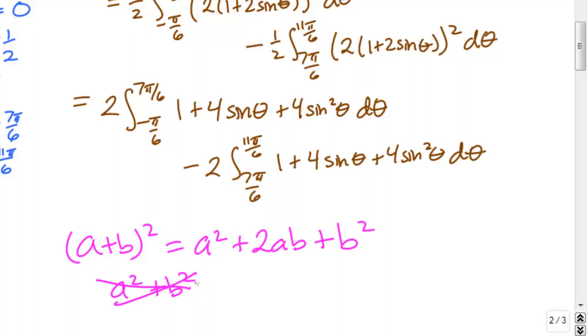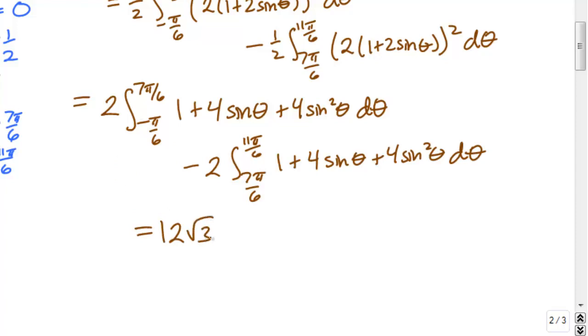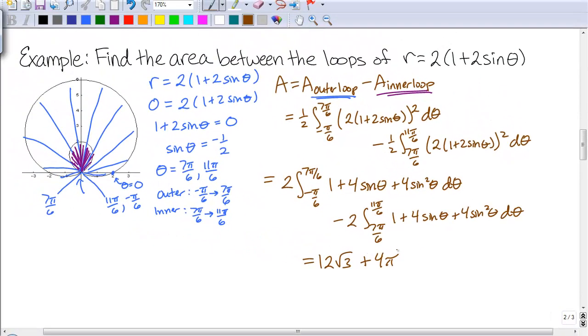It's sloppy and easy to do. With a little more work, this integral together works out to be 12√3 plus 4π, and that gives us the area we're looking for in between the two loops.